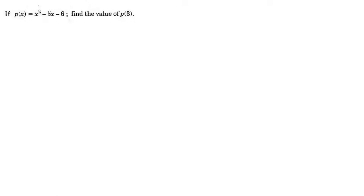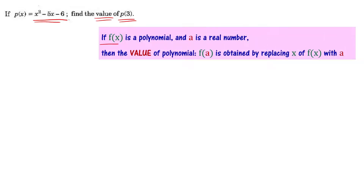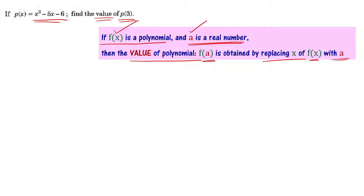If p of x equals x squared minus 5x minus 6, then what is the value of p of 3? First, the concept of value of a polynomial: if f of x is a polynomial and a is a real number, then the value of polynomial f of a is obtained by replacing x in f of x with a.